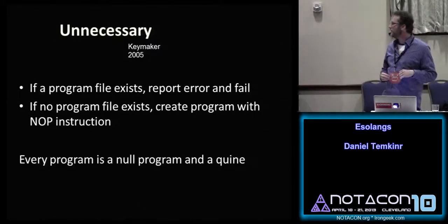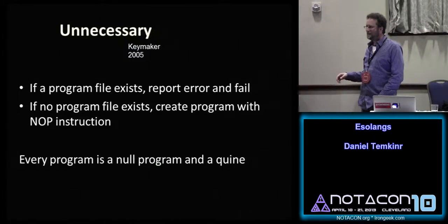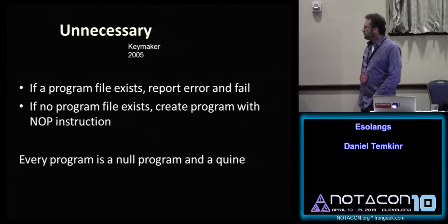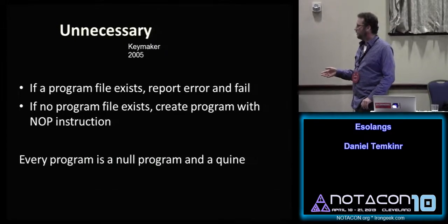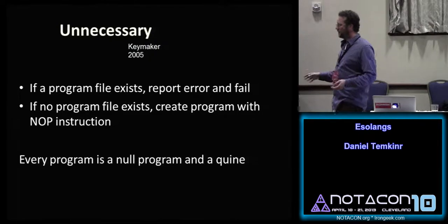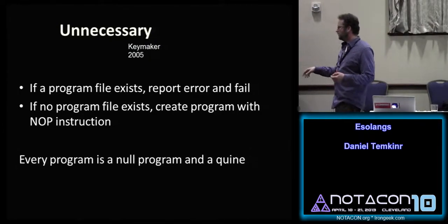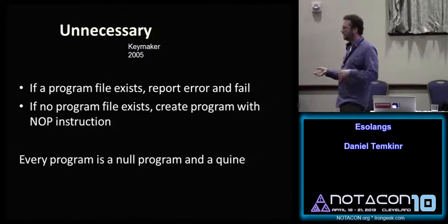On the other hand, the language Unnecessary by Keymaker: all code is bad code — no matter what you give it, it'll fail. But if it can't find your program file, it succeeds and compiles into a program with a single instruction: no operation, don't do anything. So every program it produces is a null program, but it's also a quine — a program that prints its own source code to the screen. Because there was no source code and it doesn't print anything, it's successfully printing its source code. The fact that it's a self-describing language was very important to Keymaker.